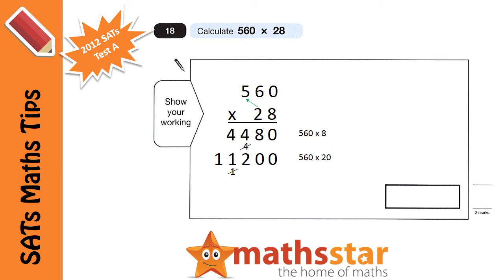Again, cross out the 1 that you carried so you don't think it's part of your answer. Now, we can add those two numbers together to find our final answer. When we add them, we get 15,680, so that's our final answer.